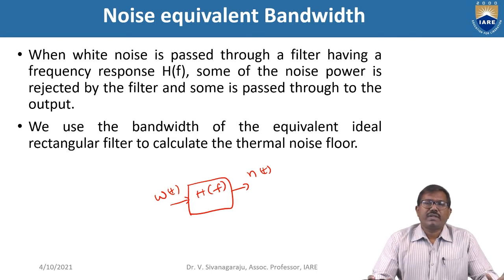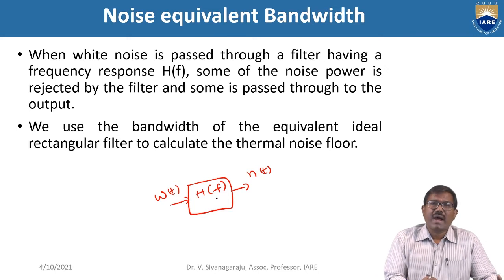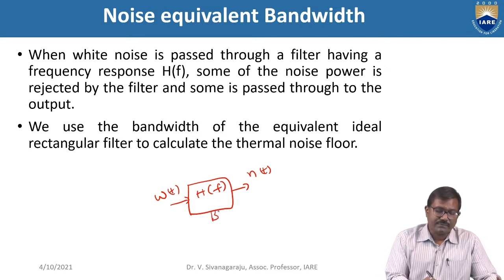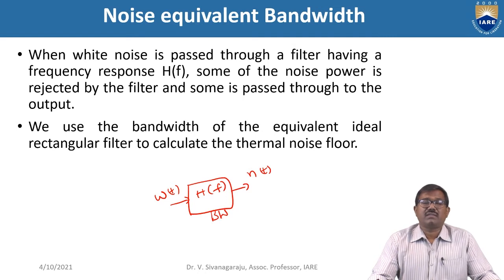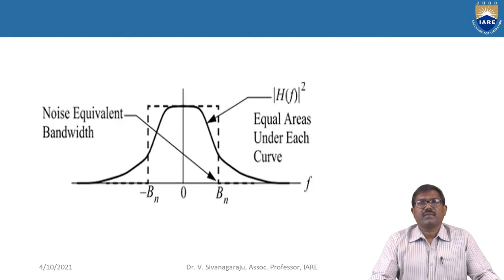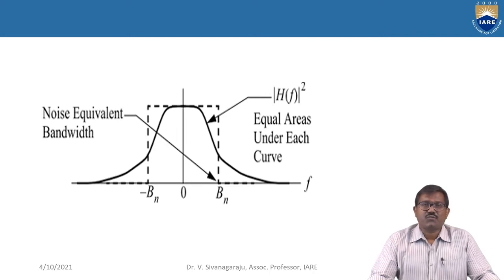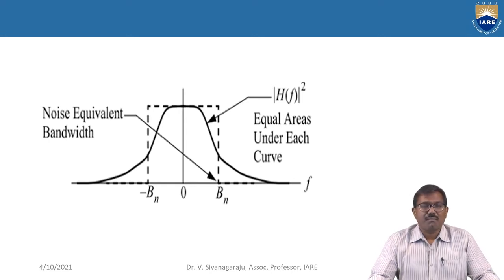By using this noise equivalent bandwidth — that is, which filter we are using and the bandwidth of this filter — that is the noise equivalent bandwidth, used to calculate the thermal noise flow. BN is the noise equivalent bandwidth and H of f is the frequency response of the filter.